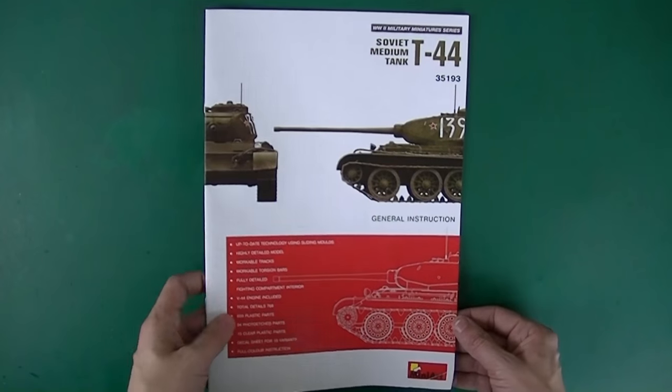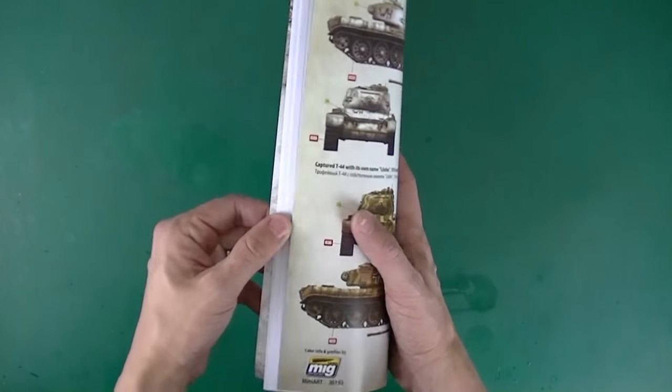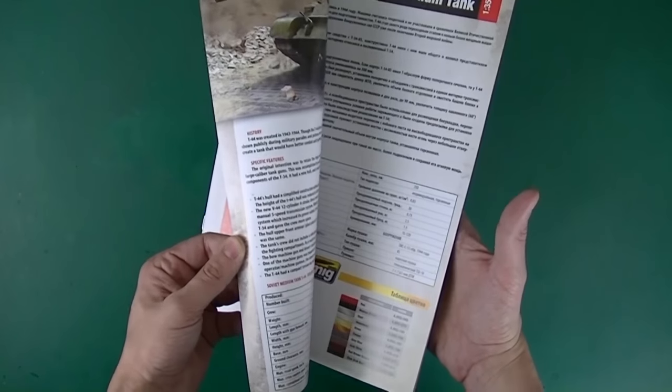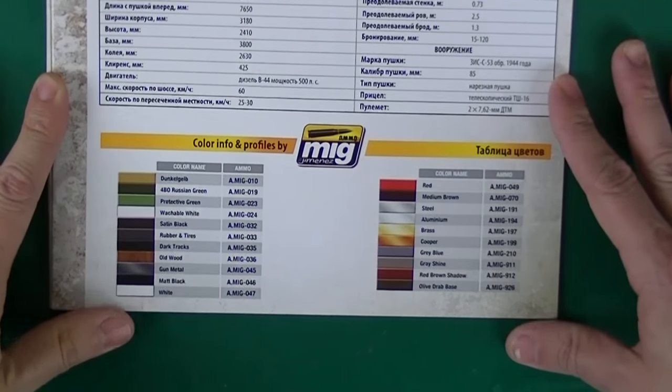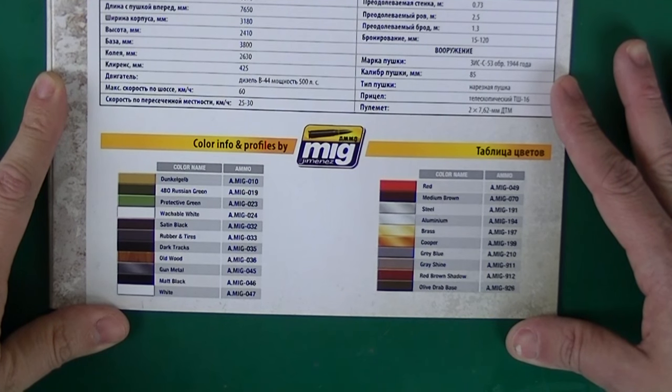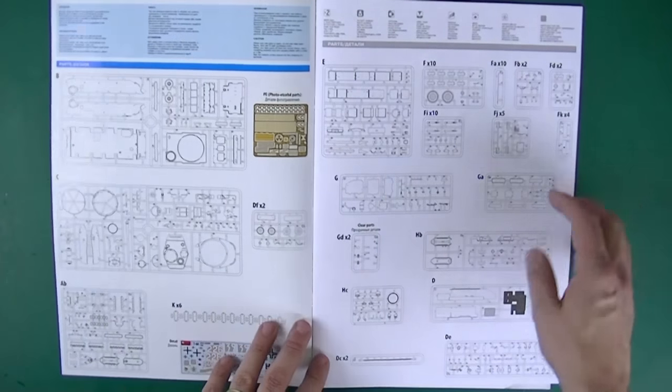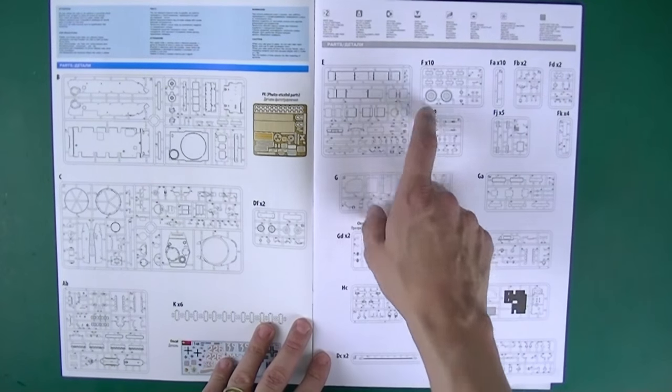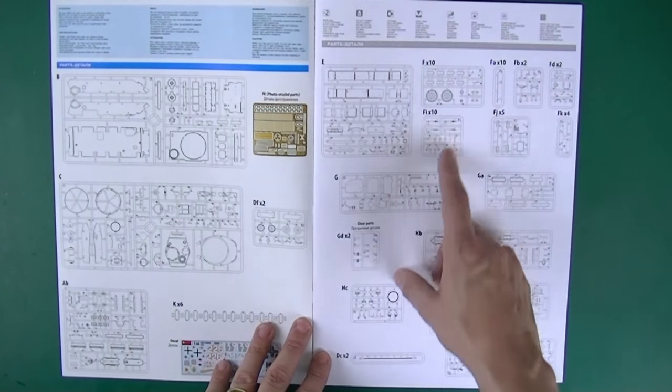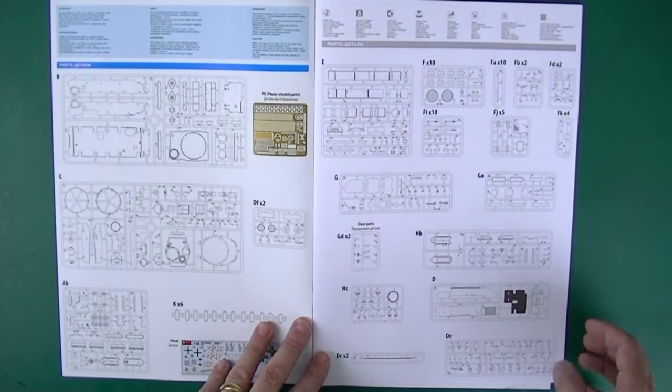The instruction book is a full color proper booklet. There are quite a few pages and quite a few steps here. Color call outs are MIG ammo which is interesting. The sprue map is quite large, you can see quite a few sprues, some of these things like F times 10, FA times 10, quite a few duplicate sprues.